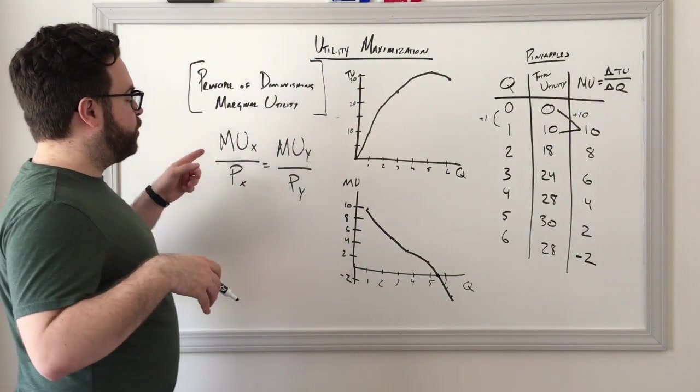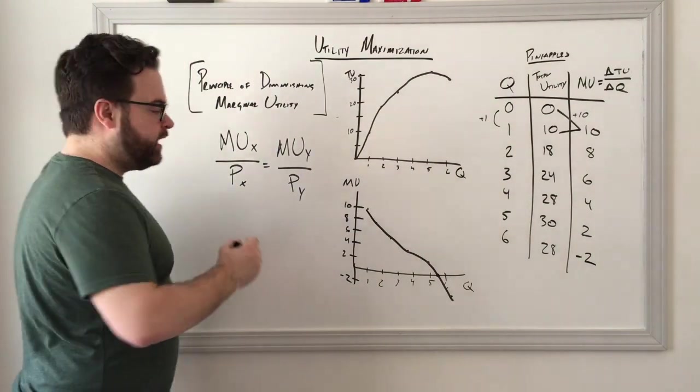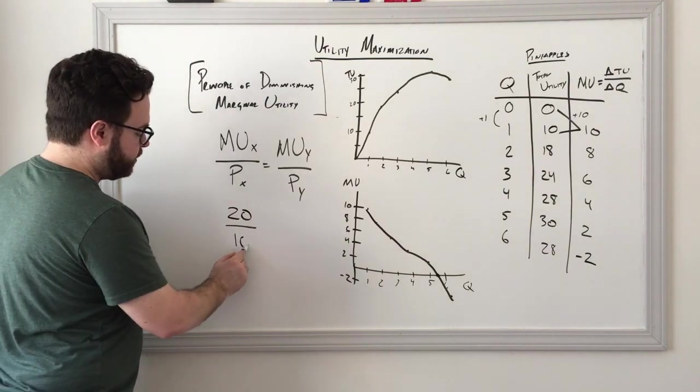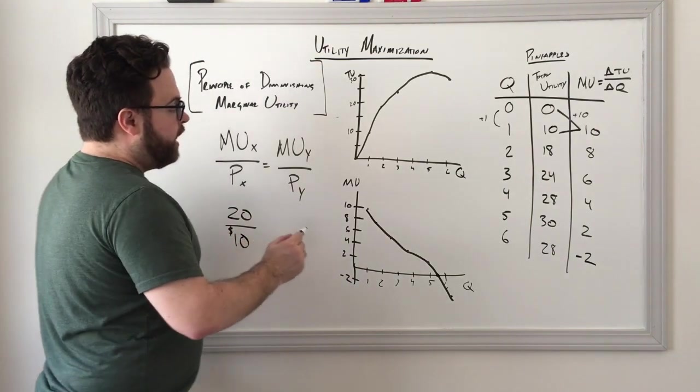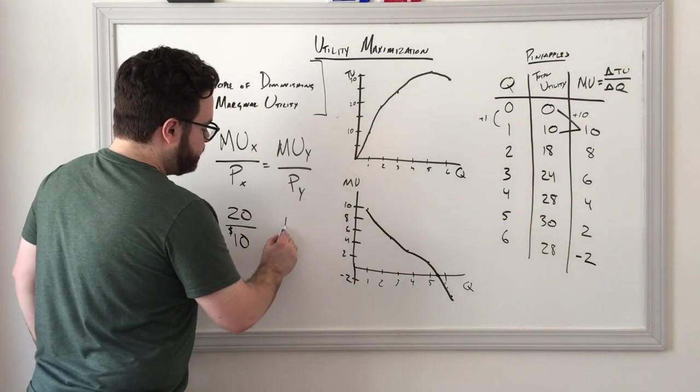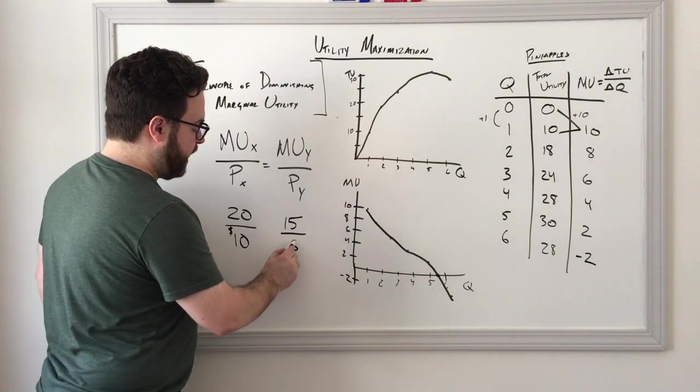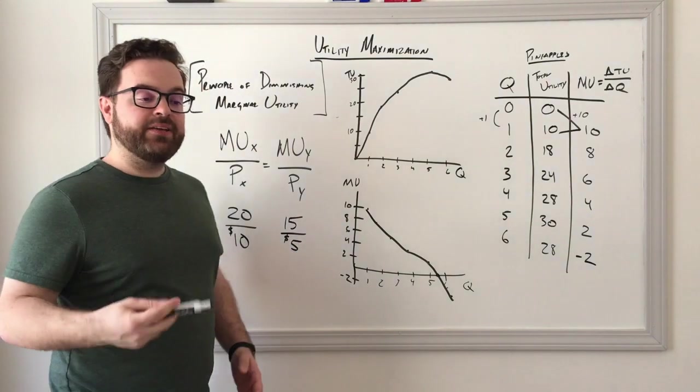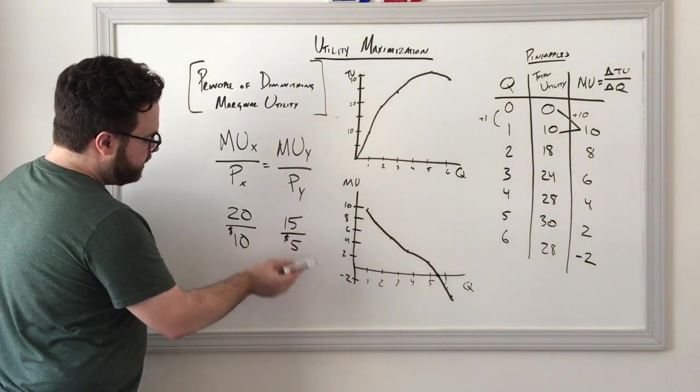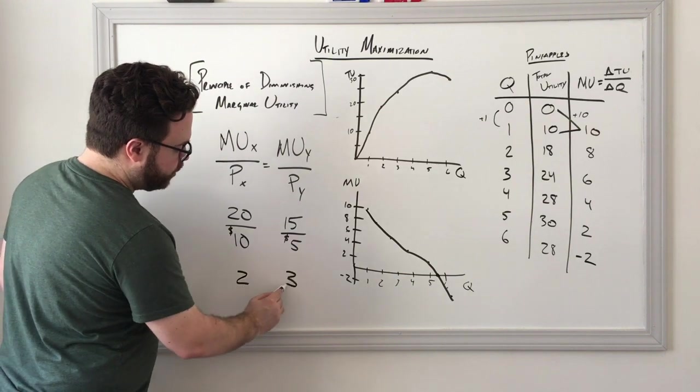So let's say for good x, the last one we consumed gave us a marginal utility of 20. The price of that last one was $10. At the same time, the last unit of y that we consumed gave us a marginal utility of 15, and the price of that was 5. So which one is giving us more utility per dollar? If we simplify, this becomes 2, and this becomes 3.